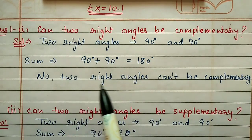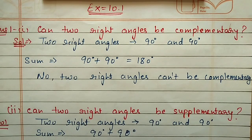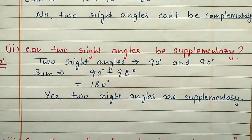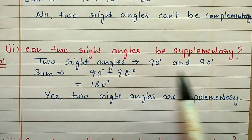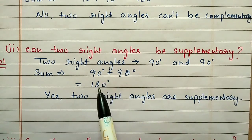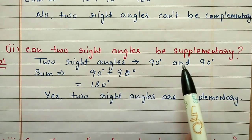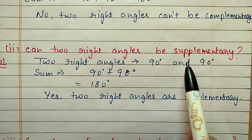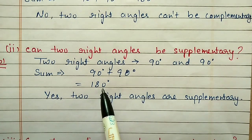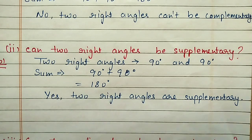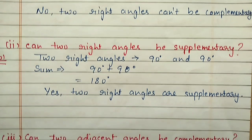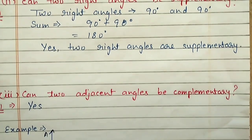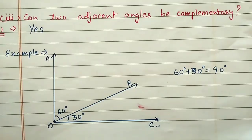Here the sum is coming 180 degrees, so no, two right angles cannot be complementary angles. Second part: can two right angles be supplementary? Again we take two right angles, and after addition we get 180 degrees. The property of supplementary angles is that the sum of two angles should be 180 degrees. Here we are getting 180 degrees, so yes, two right angles are supplementary.